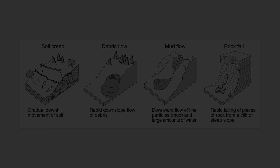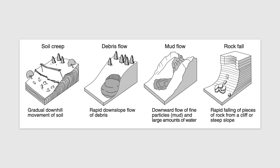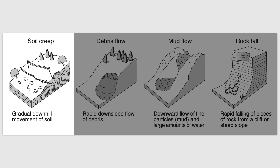We are going to look at four types. Starting with the slowest one, which is called soil creep. As we see in the diagram, soil creep is the gradual downhill movement of soil — not big chunks of rock, but soil — and it's a very slow process. This isn't some violent falling that happens rapidly; this may happen over weeks, months, years, decades, or even longer.